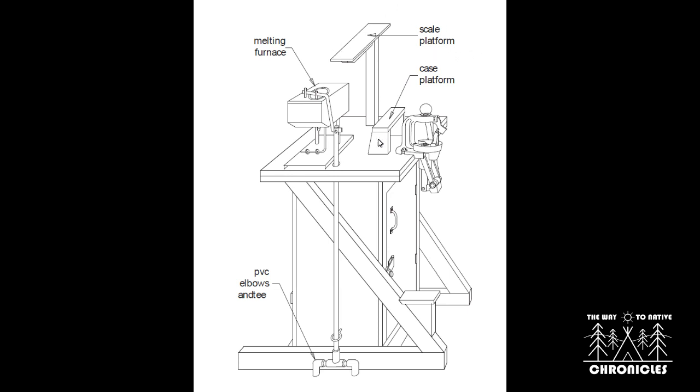You can see there's a scale platform and a case platform for resting cases. Not shown here, there's a powder measure that sits over top of that case platform, and the case platform is handy for resting the palm of your hand when you're holding short cases underneath it, because it's mostly the handgun cartridges that you reload a lot.